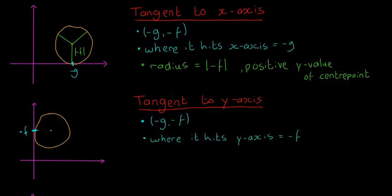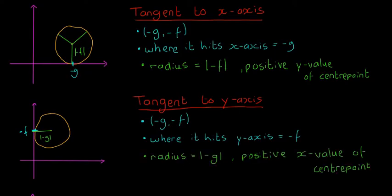The same logic applies to the radius when tangent to the y-axis, except in this case the radius equals the modulus of -g. That's because -g is the x-value of the centre point — however far across the centre point is, that's the same distance from the y-axis, so it equals the radius. The radius equals the modulus of -g, or the positive x-value of the centre point.